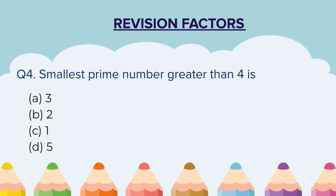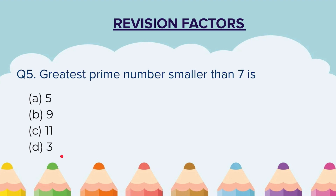Question 4: The smallest prime number greater than 4 is? Please select your answer from the options given. Question 5: The greatest prime number smaller than 7 is? Please select your answer from the 4 options given.